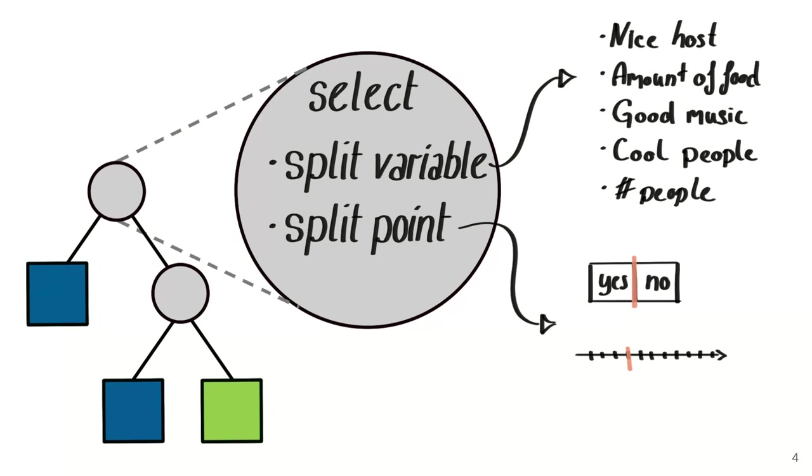And the most important part is the selection of the split variable and the split point. So what is a split variable? A split variable could in our first example with the party be whether there's a nice host, how much food there is, whether there's good music, cool people, and the number of people as well.